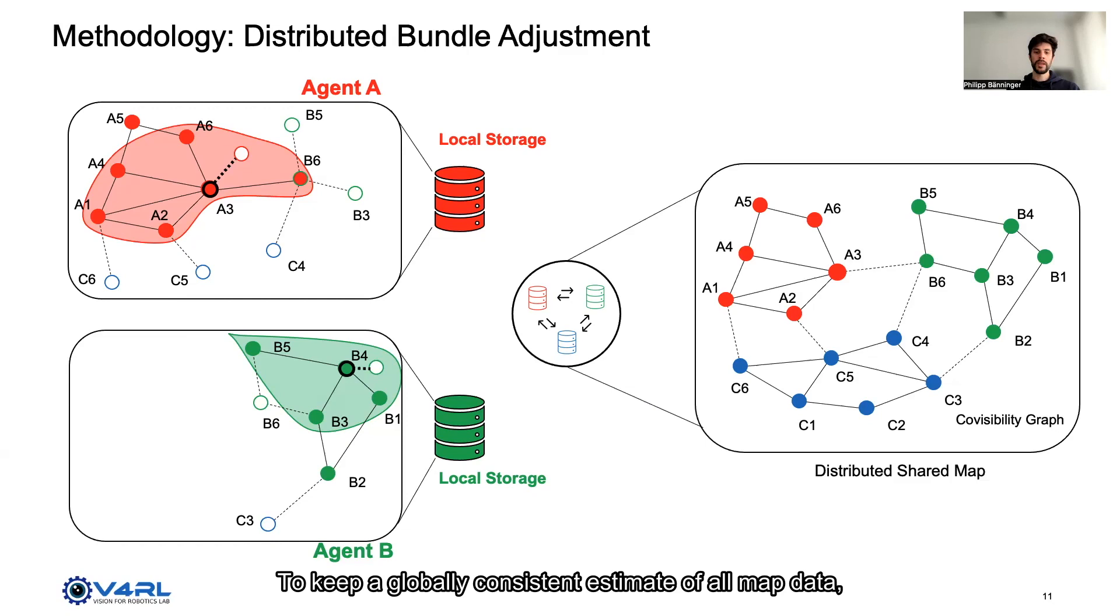To keep a globally consistent estimate of all map data, we run a distributed bundle adjustment using consensus optimization. Individual sub-problems on agents are connected via commonly observed map points across covisibility edges. Agents optimize their local problems, send updated common map points to the shared map where a consensus variable is updated.